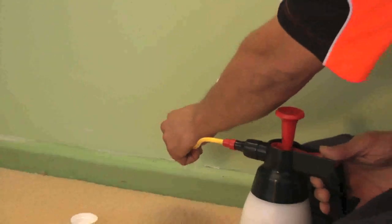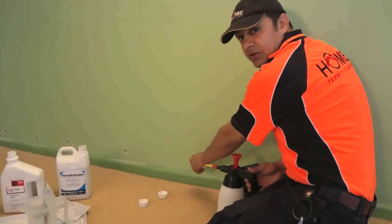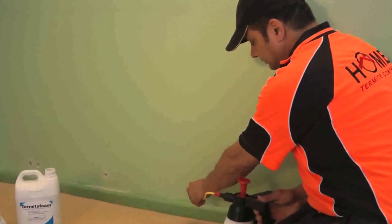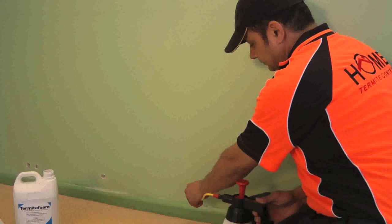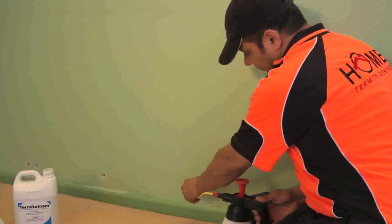I know termites are in this cavity and I know that Altriset will stop them from eating the timber within two to four hours. Oh, that's great.